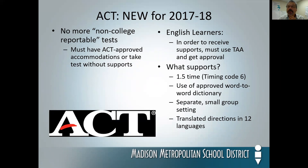Also new this year, English language learners in order to receive their supports will have to go through a process that involves the TAA software and must also get approval from ACT. What kinds of supports are available? Timing code 6, which is a one-and-a-half time extension for the entire test; use of approved word-to-word dictionaries; separate small group settings; and translated directions — the directions and appropriate comments are translated into 12 different languages. There will not be any DVDs or CDs reading directions in another language; they will be printed. There will be specific ACT tests that come without students' names attached, but you will have to line them up — you need to know who gets what support and what language.